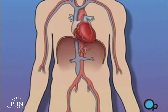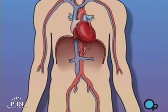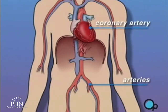The heart is located in the center of the chest. Its job is to keep blood continually circulating throughout the body. The blood vessels that supply the body with oxygen-rich blood are called arteries. The arteries that supply blood to the heart muscle itself are called coronary arteries.